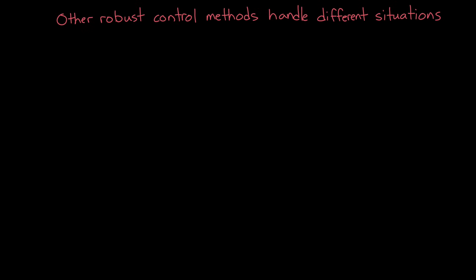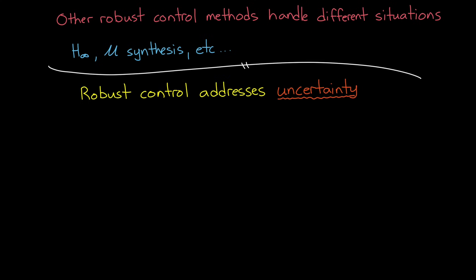Therefore, there are other robust control approaches to handle different situations. Things like h-infinity loop shaping, or mu synthesis, or something else. There's a bunch of methods. But the point of all of this, though, all of robust control theory is just to address uncertainty.